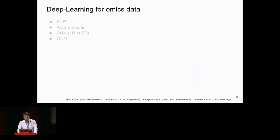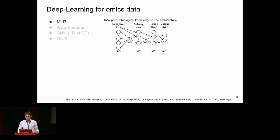If we look at what architectures have been tested on omics data: a gene expression profile is a vector with no particular structure, so MLPs or fully connected networks are the way to go. The idea is you feed your vector into your network, and each layer constructs a new representation that eases the prediction task.